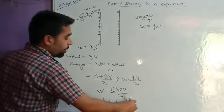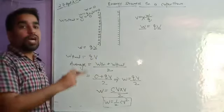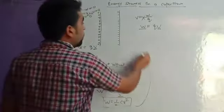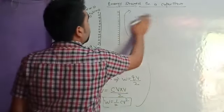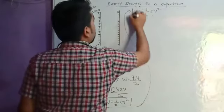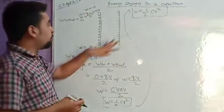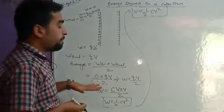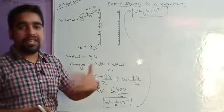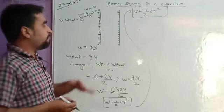This work done to accumulate all the positive charges — to charge this particular capacitor — is stored in the form of potential energy. So we can say U = half CV squared. This is the energy stored inside a capacitor. That was the mathematical way to derive it. Now we will do a slightly more rigorous derivation using integration.